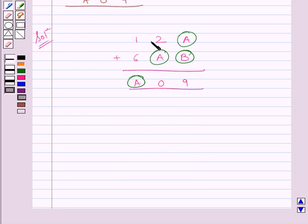Clearly, you can see one digit of 2 plus A is 0. You know that this is possible only if A is equal to 8.